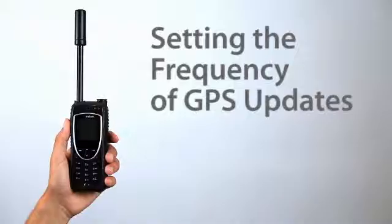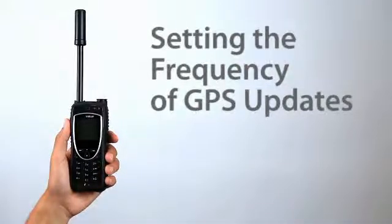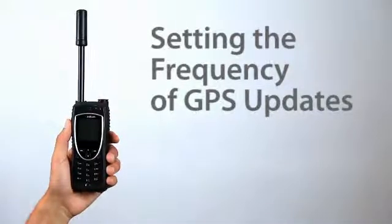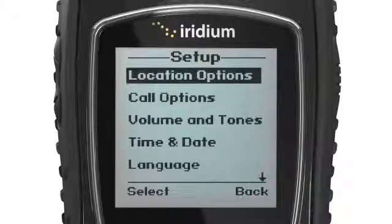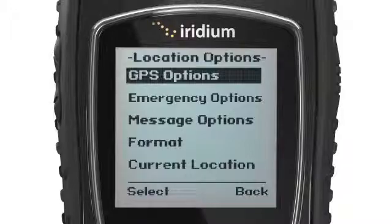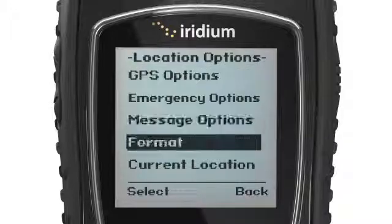Once your GPS is enabled, you can view and share your current location and customize your settings. To view your GPS coordinates, select Location Options from the Setup Menu and scroll to highlight Current Locations.